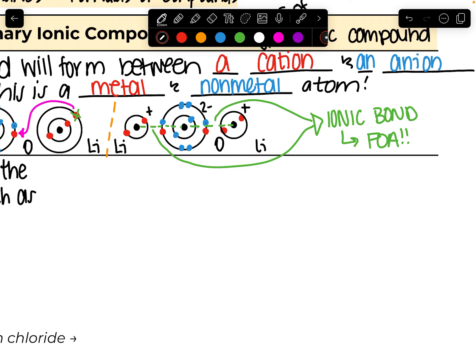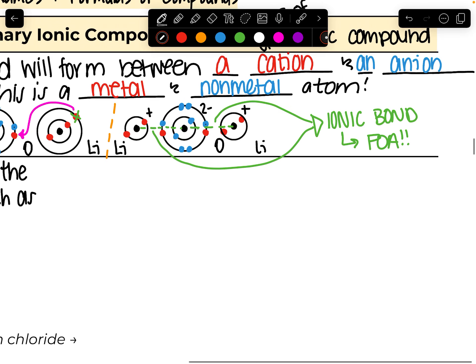How many lithiums did I need? Two. I need two lithiums that each gave up one electron to one oxygen to make everything stable. So when you write this formula, you write it as Li₂O — lithium 2 oxide. I need two lithiums for every one oxygen. But drawing out Bohr models to justify the formula takes a lot of work, so we're going to find a quicker and easier way.